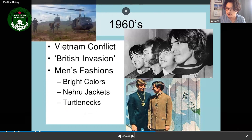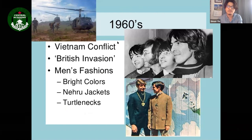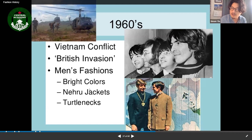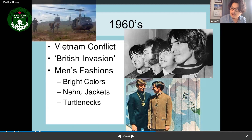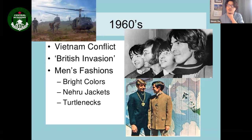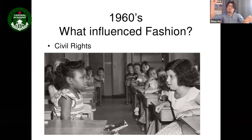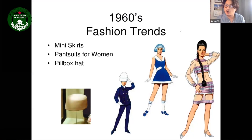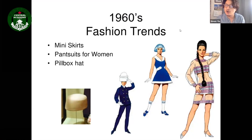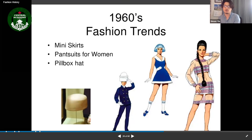In the 1960s, the Vietnam conflict and the British Invasion were major events. Men's fashion changed significantly — bright colors emerged, along with Nehru jackets featuring high collars, and turtlenecks became popular. Civil rights also heavily influenced clothing, leading toward the black cultural movement.